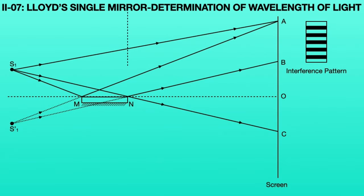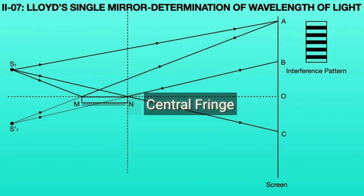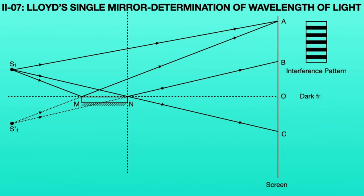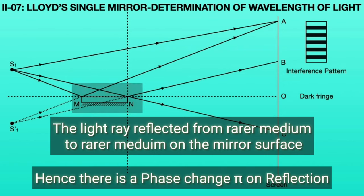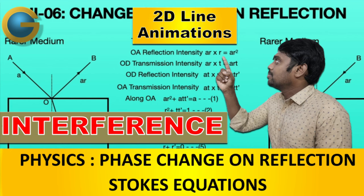If the screen is placed just in contact with the mirror end point, two light rays coming from both sources S1 and S1 dash are superposed on each other, and a central fringe is formed. But this central fringe becomes a dark fringe. Because due to mirror MN, the light ray reflects from rarer medium to rarer medium on the mirror surface. Hence, there is a phase change of π on reflection, which results in a path difference of lambda by 2 between S1 and S1 dash light rays.